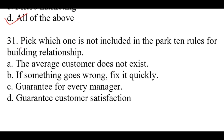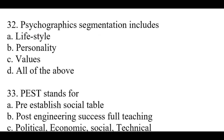Question number thirty-one: Which one is not included in the 10 rules for building relationship? Right option is C: Guarantee for every manager. Question number thirty-two: Psychographic segmentation includes — right option is D, all of the above: lifestyle, personality, and values.